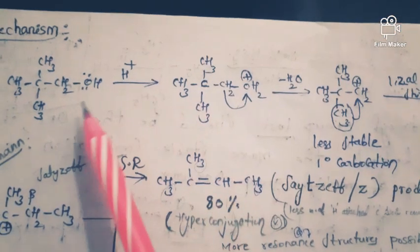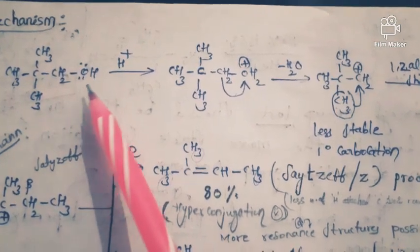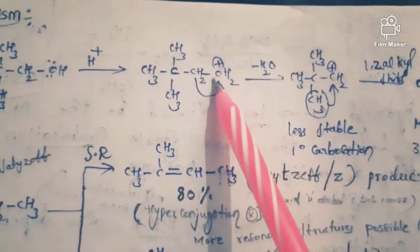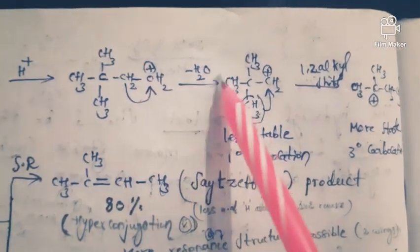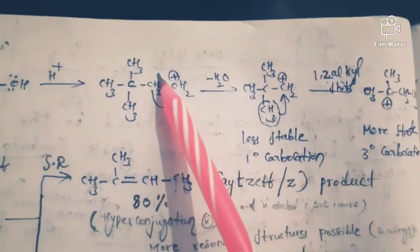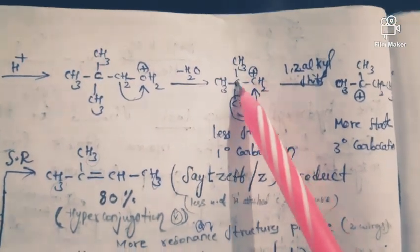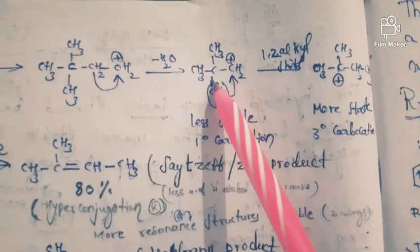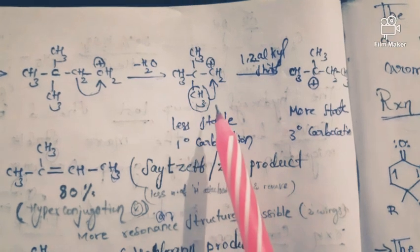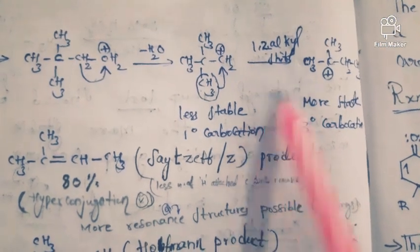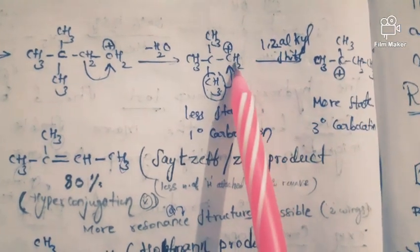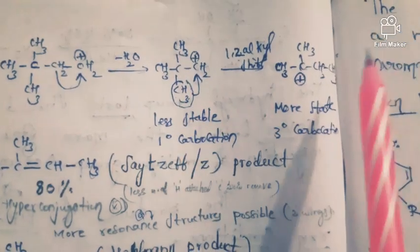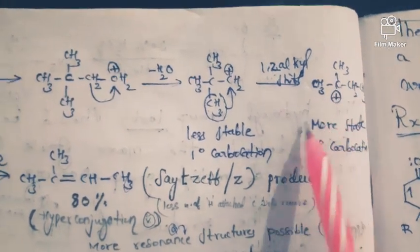Mechanism for the Wagner-Meerwein rearrangement: we have taken neopentyl alcohol. In acidic conditions, it abstracts H+, giving OH2+ — a very good leaving group — so the OH2 group is lost and the CH2 group gets the positive charge. In the next step, a 1,2-alkyl shift occurs: the methyl group migrates to this carbon, so that this adjacent carbon gets the positive charge. The main reason behind the shift is stability — this CH2 is a primary carbocation and is less stable, whereas the tertiary carbocation formed is more stable.